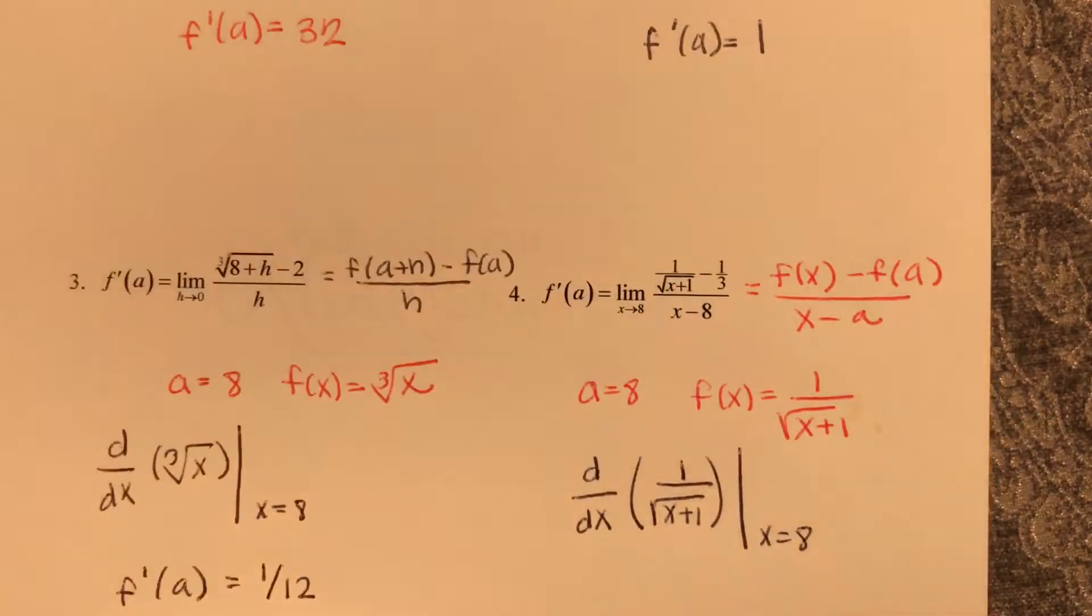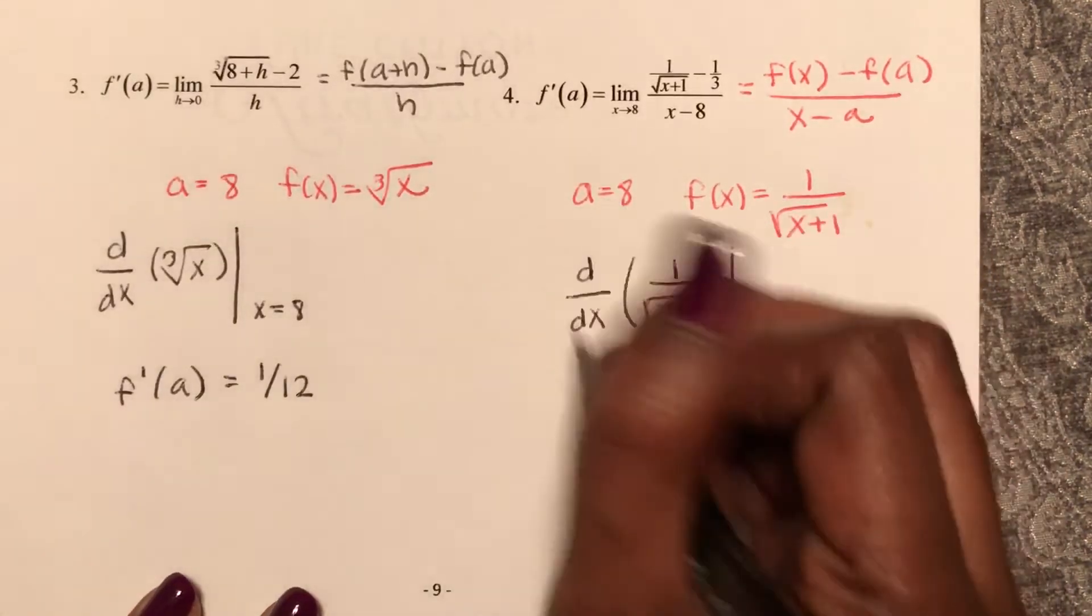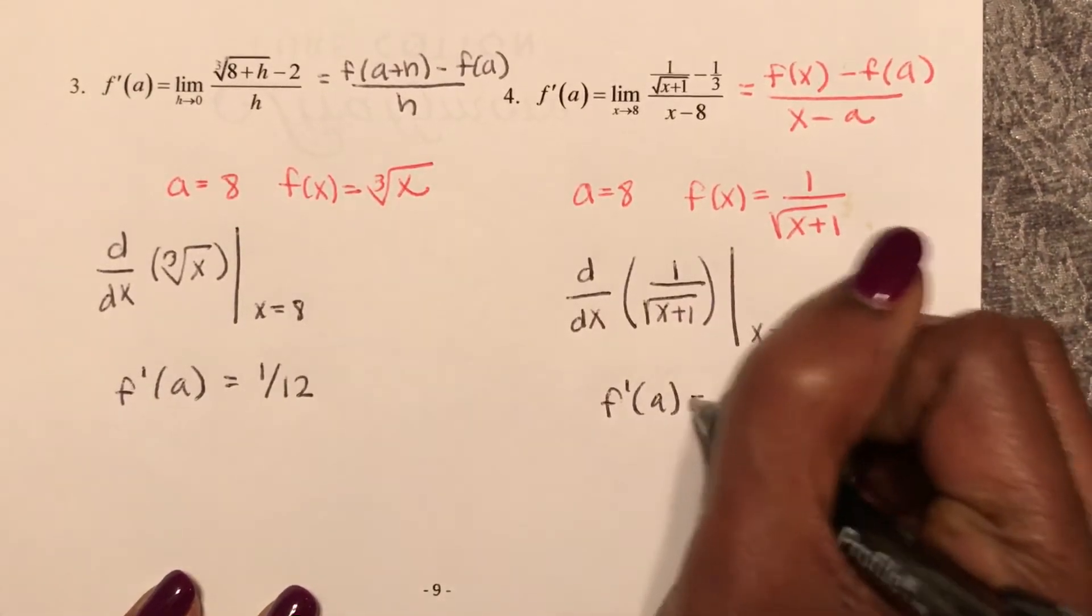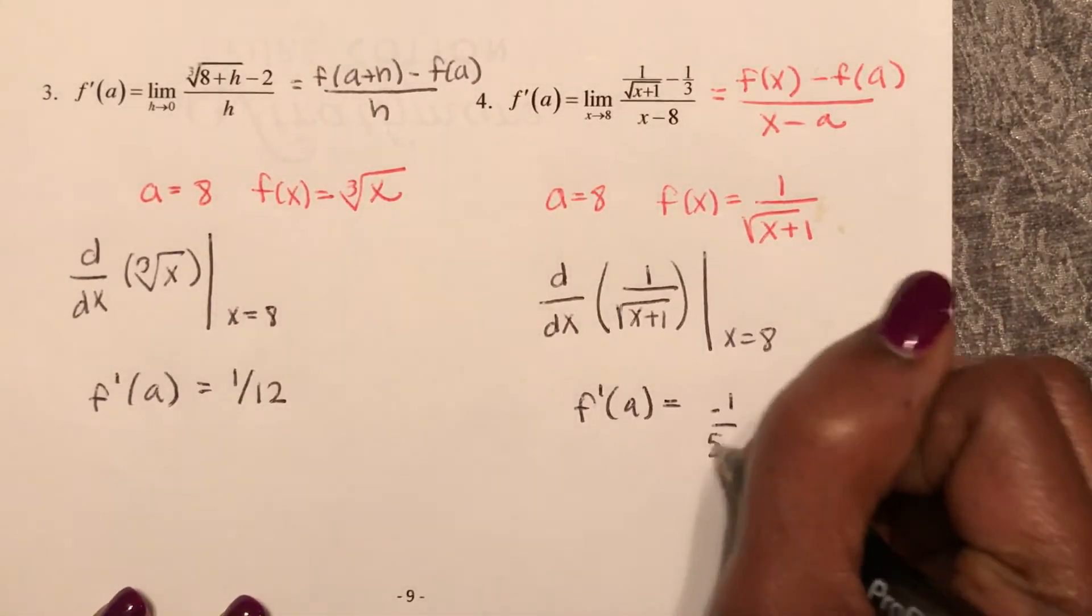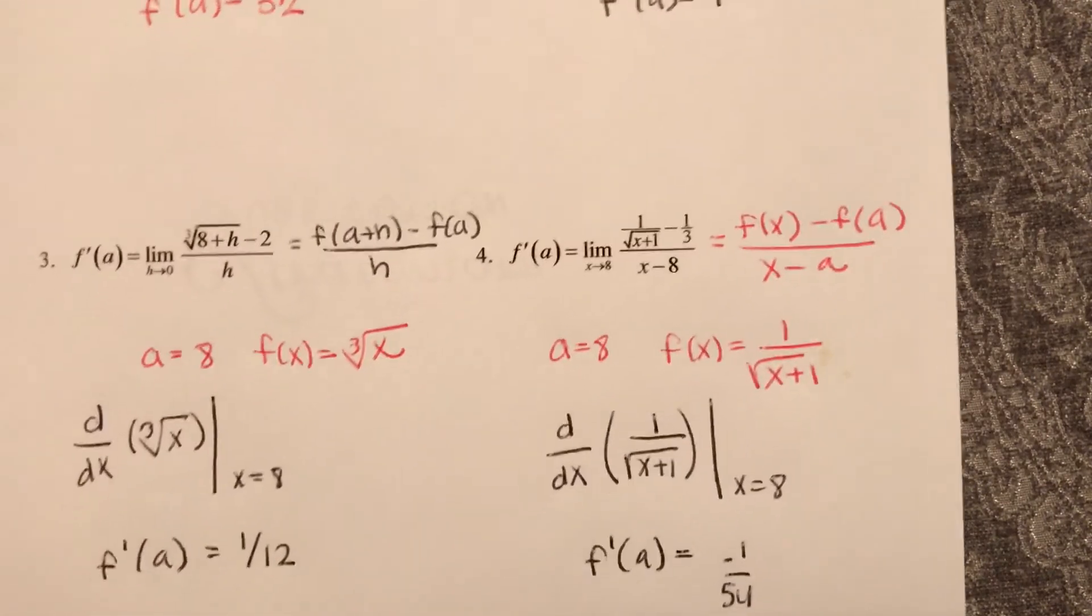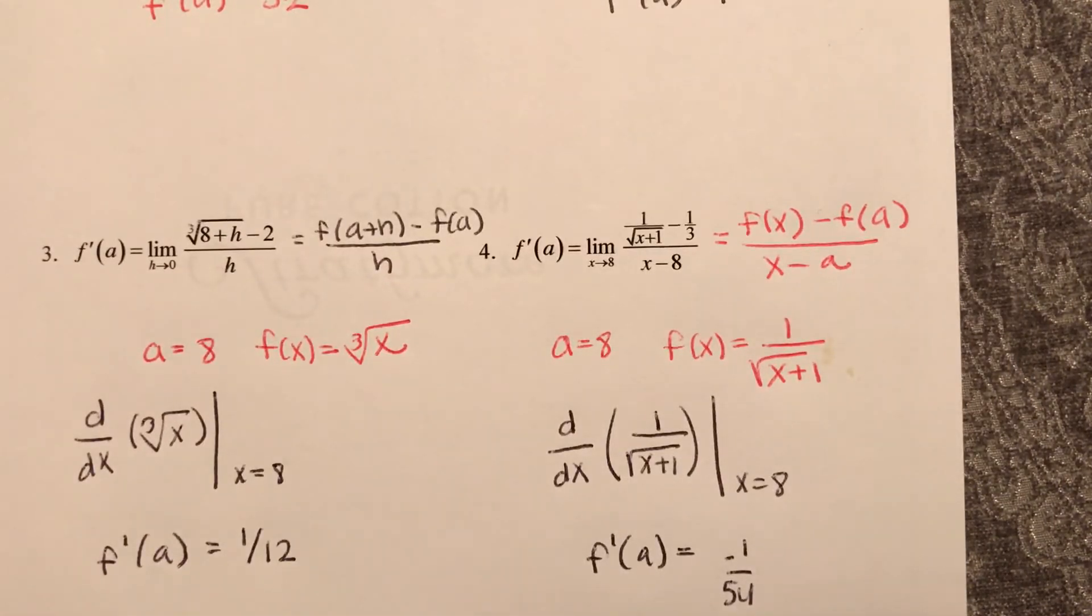And that's negative one over 54. So f prime of a equals negative one over 54. So we can represent, we can see limits as derivatives now.